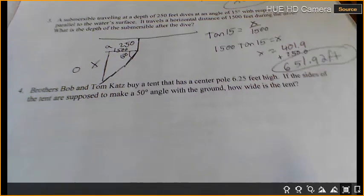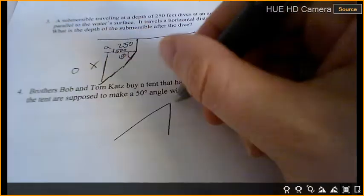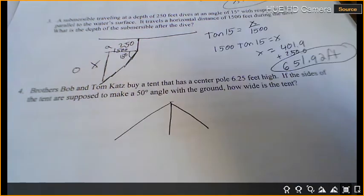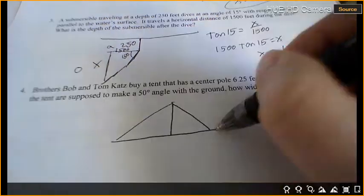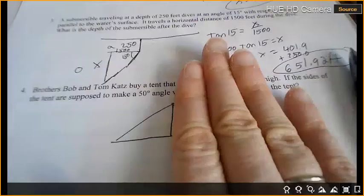Okay, the first thing I want to talk about is it says it's a center pole, so that means the pole must be in the middle and we're looking at a tent that looks like this, right? So what we're going to do is we're going to find just one side of this tent and then we're going to times it by two to find the whole width.